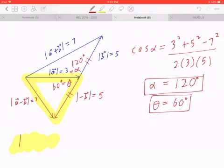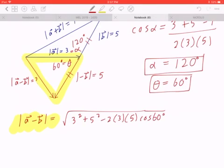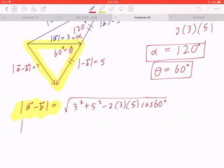So the magnitude of A minus B equals the square root of 3 squared plus 5 squared minus 2 times 3 times 5 cosine 60 degrees. And again, if you work this out with your calculator and leave the answer in exact form, this equals the square root of 19.